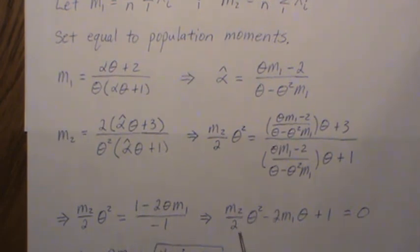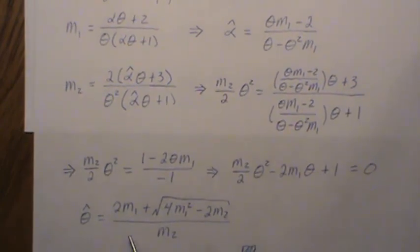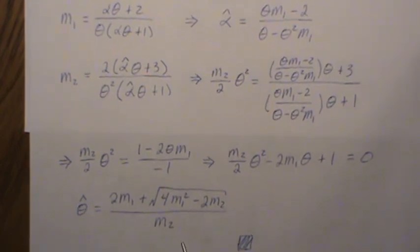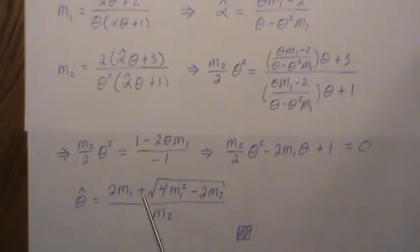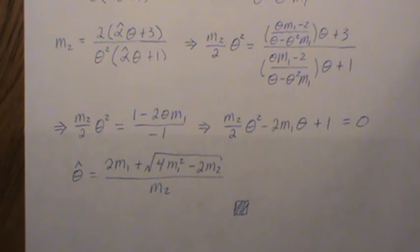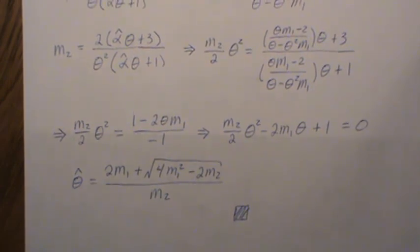Now we take everything to one side and then we get a quadratic equation in theta. Then we use the quadratic formula to solve for theta, and this is it. So this is our method of moments estimator for theta. Then you take it and plug it back in to solve for alpha, and those are your method of moments estimators for the two-parameter Lindley distribution.